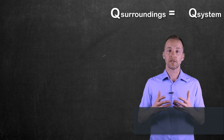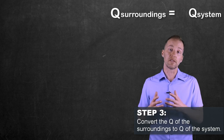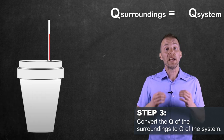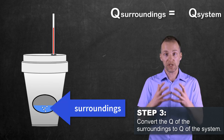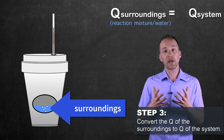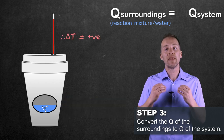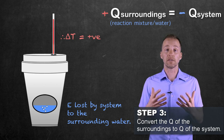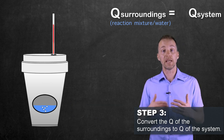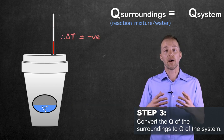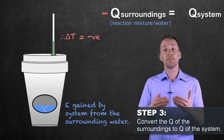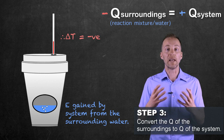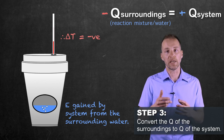Our next step is to change the sign — from positive to negative or negative to positive. If the temperature of the surroundings, which is our water or solution, went up, that means energy was lost by the system and gained by the surroundings. Conversely, if the temperature of the water went down, that means our surroundings lost energy and our system gained energy. So if we're trying to analyze the overall enthalpy change of the system, we have to change the sign.